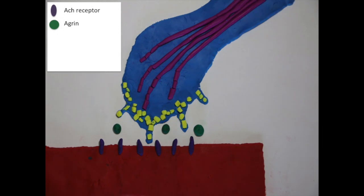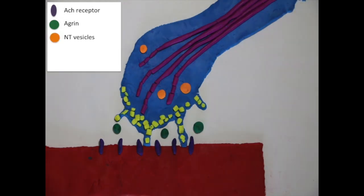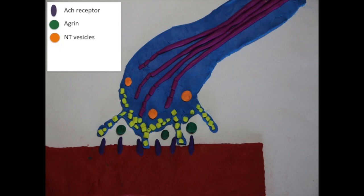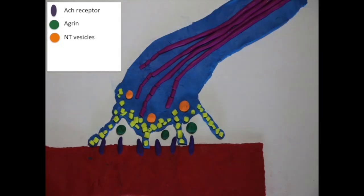Next, neurotransmitter vesicles, shown in orange, enter the axon terminal. At this point, an extracellular matrix containing neuron-specific laminin is produced to connect the axon terminal to the muscle cell.